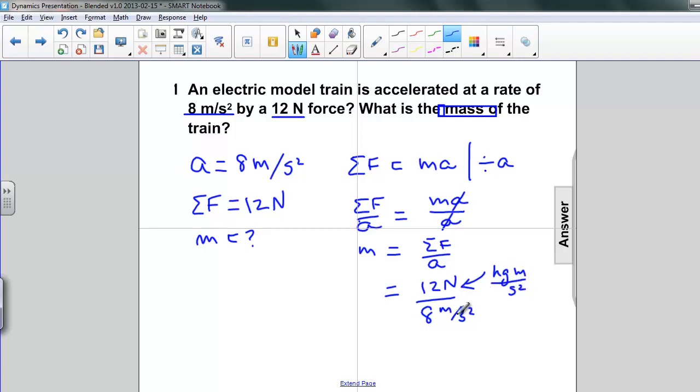So, we have meters per second squared on the bottom, and we have meters per second squared on the top. So, these will cancel, and we'll just be left with the kilograms.